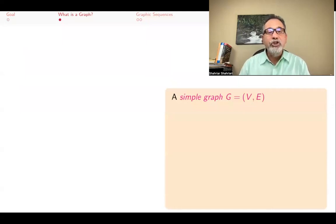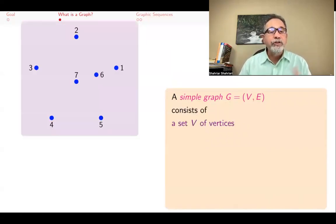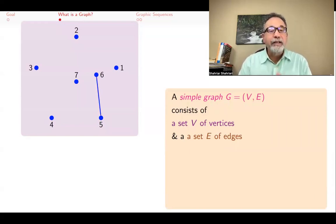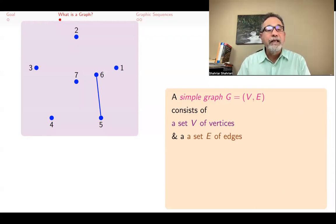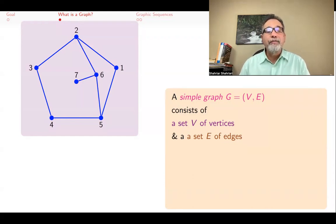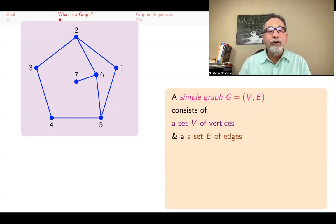A simple graph G consists of two sets, V and E — a set of vertices V and a set of edges E. Vertices are just nodes, and some of these are connected to others; those connections are called edges. An edge can be thought of as a pair of vertices. For example, here I might have seven vertices: 1 through 7, with edges connecting 1 to 2, 2 to 3, 3 to 4, 4 to 5, 5 to 1, 5 to 6, 6 to 7, and 2 to 6. That's all a graph is — a collection of vertices and a collection of edges.